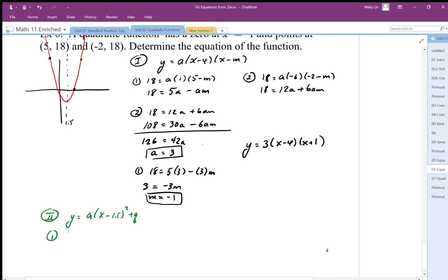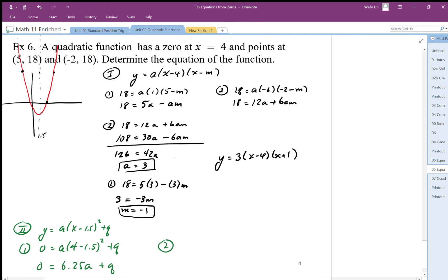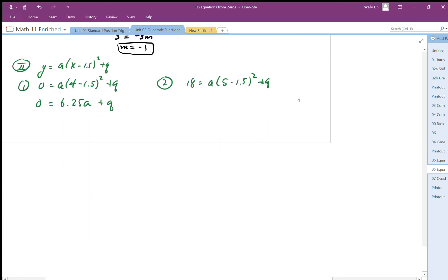I'm going to plug in y is 0 when x is 4, and I end up with an equation that looks like this: 0 = 6.25a + q. There's one equation. My second equation - I'm going to plug in one of the coordinates, so I get 18 = a(5 - 1.5)² + q, and I end up with, looks like it's going to be 3.5 squared.